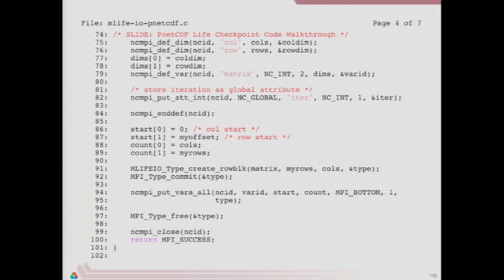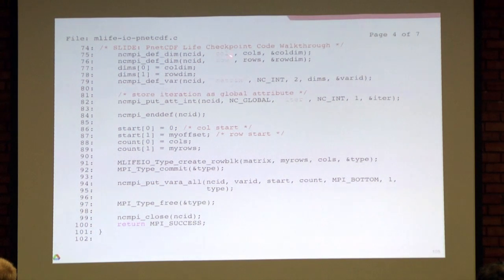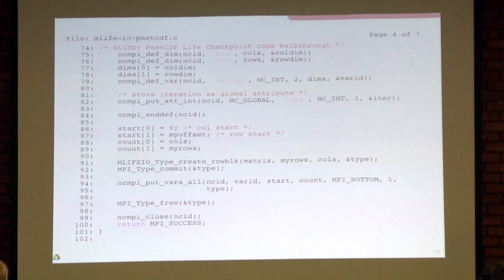There's a lot going on in this slide. First we define some dimensions. NetCDF holds metadata about the dimensions and names of variables, so we have to tell it that information. We call functions to define a dimension called 'col' of column size and get back a reference, and define a dimension called 'row' of that size and get back a reference. Then we create a variable in NetCDF by saying: I would like a variable called 'matrix', I would like it to hold integers, it has two dimensions — columns and rows — and we get back a reference to that variable.